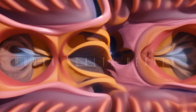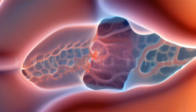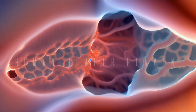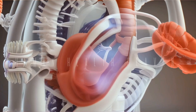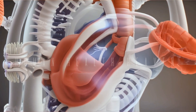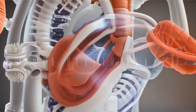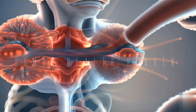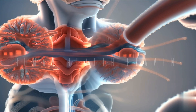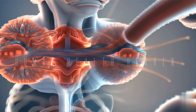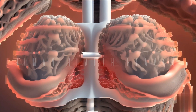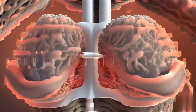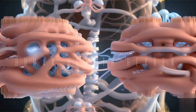Mucus membrane: the inner lining of the bronchi has a mucus membrane that produces mucus. This mucus helps trap dust, particles, and microbes, preventing them from entering the deeper parts of the respiratory system. Ciliary action: tiny hair-like structures called cilia line the bronchial walls and move in coordinated waves. This ciliary action helps move the trapped particles upward towards the throat, where they can be either swallowed or expelled.